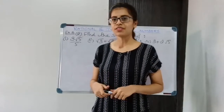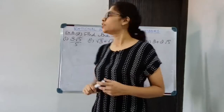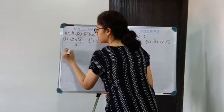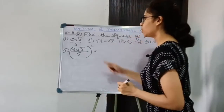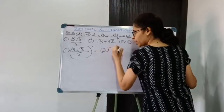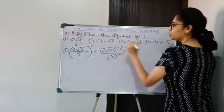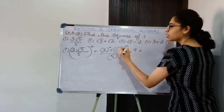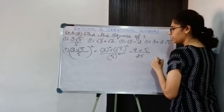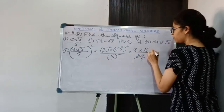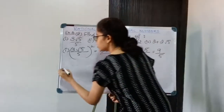Moving on to the second question: find the square of the given numbers. The first number is 3√5 by 5. I need to square it: 3² × (√5)² upon 5². 3 squared gives 9. Square of a root of a number is the number itself, so (√5)² = 5. And 5² gives 25. So the answer is 9 by 5.